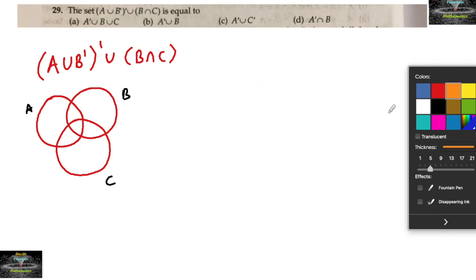First, let's find (A union B complement) whole complement. The complement of B — let me use shaded colors to draw B complement. So this is your B complement, taking the shaded part other than B.